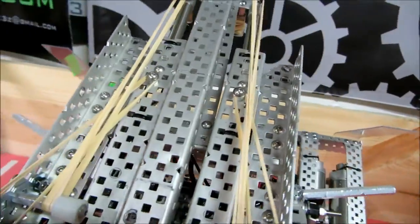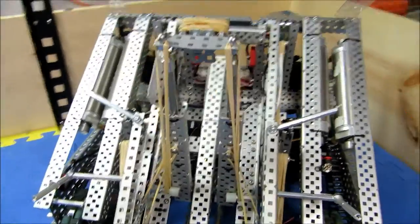Instead, we designed our hanging mechanism to use two double-acting cylinders, which will hook on and lift the robot off the ground.